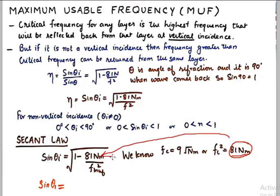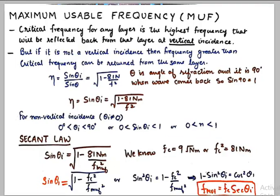Squaring both sides and taking one on the other side gives me cos square theta I, and F MUF becomes FC secant theta I, and this is also known as the secant law.